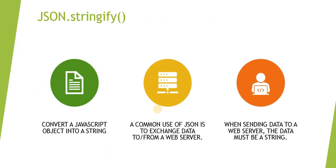Next is JSON.stringify, which is used to convert a JavaScript object into a string. A common use of JSON is to exchange data to and from a web server. When you are doing an integration or bringing values using GlideAjax, you can very well use JSON.stringify — it is advisable to use that, because when sending data to a web server the data must be in a string. Let's quickly see in this demo how we can use stringify and how it looks.